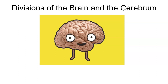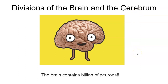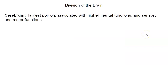Today we're going to focus on the divisions of the brain, and then we'll specifically look at one of them, the cerebrum. Your brain contains billions of neurons. The divisions of the brain — I've decided to break this up into four divisions. The first one is the cerebrum, the largest portion of your brain, associated with higher mental functions and sensory and motor functions. That's also where you would formulate memories, personality, intelligence, and where reasoning takes place.